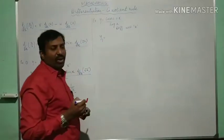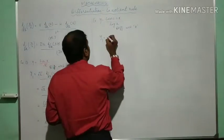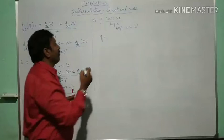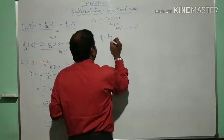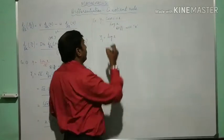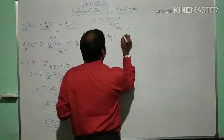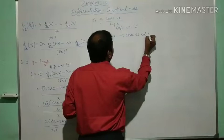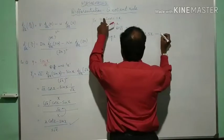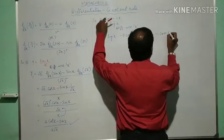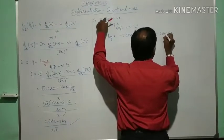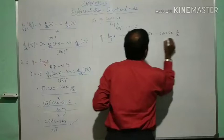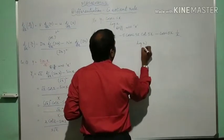Now y prime, first order derivative, d by dx. Now direct method will go, no need to solve this method. Denominator is log x into derivative of numerator—that is cosecant 5x is minus 5 cosecant 5x into cot 5x, minus again numerator cosecant 5x into log x derivative is 1 by x, whole divided by log x whole square.